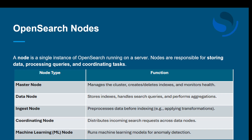A node is a single instance of OpenSearch running on a server. Nodes are responsible for storing data, processing queries, and coordinating tasks. There are different types of nodes. The master node controls the cluster and manages indexes — actions like creating or deleting indexes — and also monitors the health of the cluster.